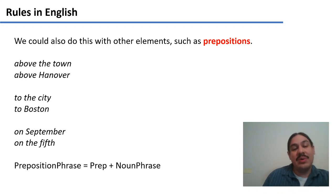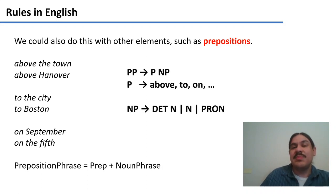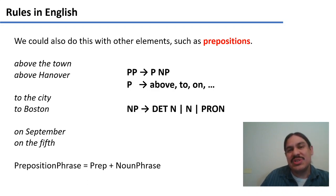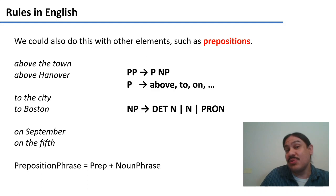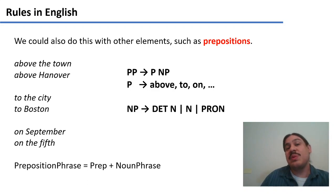By doing this, you don't have to redefine noun phrase for the specific thing that goes after a preposition. You can just say a prepositional phrase is a preposition plus that other thing you had defined before. In English, the rule is: a prepositional phrase, or PP, is a preposition plus a noun phrase. We can reuse the rule we already had for noun phrases to put it inside the prepositional phrase. This is one way to describe prepositions in English.